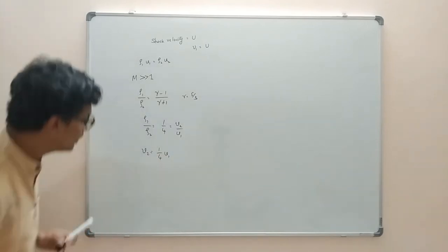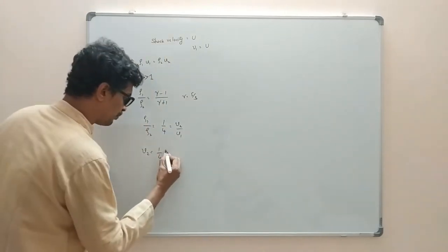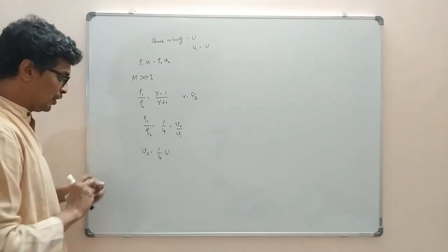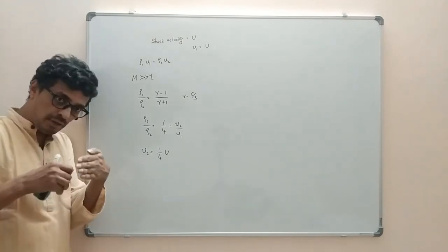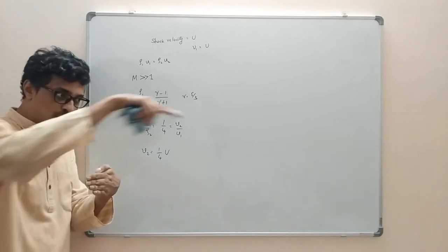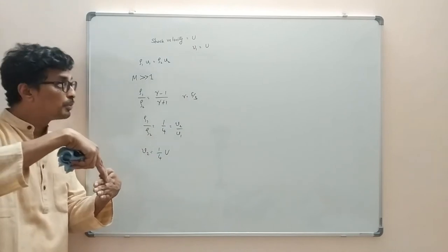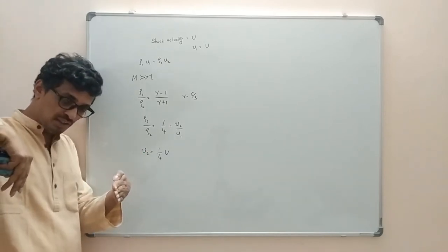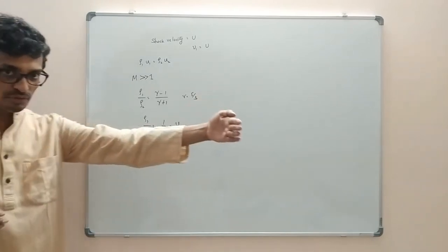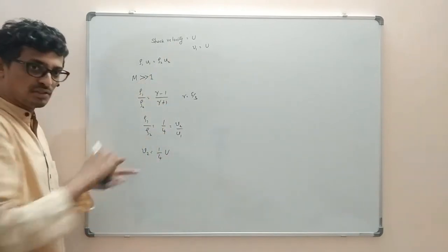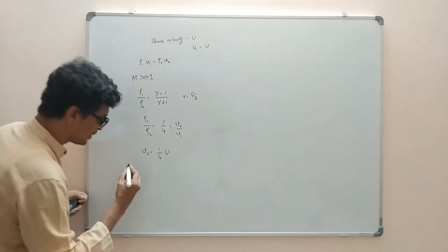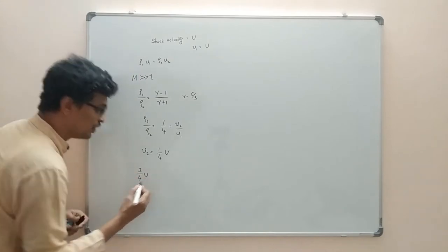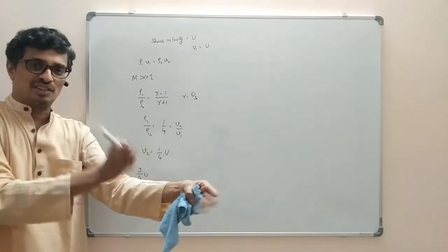We know V₁ is nothing but the shock velocity U. So in the shock frame, the upstream fluid moves toward the shock at speed U, while the downstream region moves away at U/4. If you sit in the downstream region, you see the upstream moving at U − U/4 = (3/4)U. Similarly, the upstream sees the downstream moving at (3/4)U.